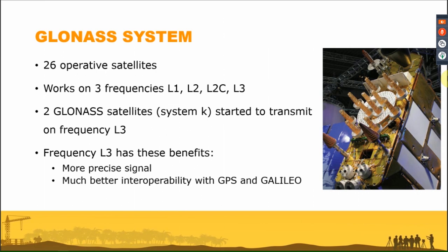Only the new GLONASS-K satellites — currently only two — are capable of transmitting L3 frequencies. The benefits of L3 include a more precise signal and better interoperability with GPS and Galileo. Compared to GPS, the GLONASS L1, L2, L3 frequencies differ from GPS G1, G2, and G3. These two systems also have different satellite orbital heights.